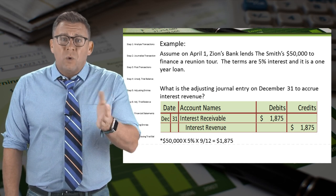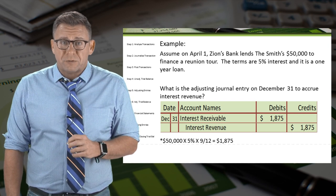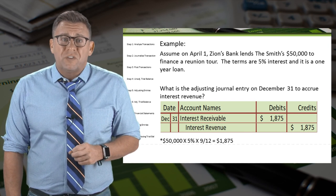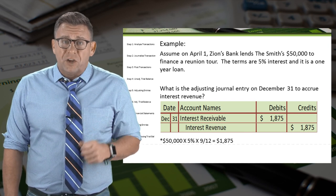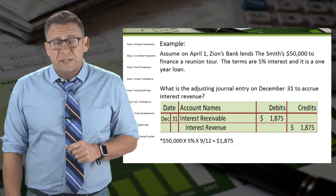If you want to see how the Smiths would record the adjusting entry from their perspective, I would encourage you to watch the next video for accrued interest expense.